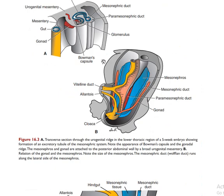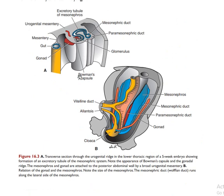In this diagram you can visualize the gonadal ridge, the mesonephric ridge, and the paramesonephric duct. Here is the paramesonephric duct and here is the mesonephric duct. The mesonephric duct is going to have the mesonephric ridge associated with it.